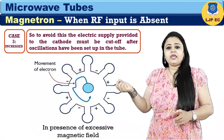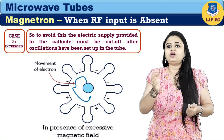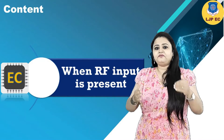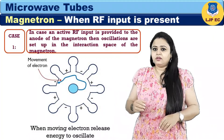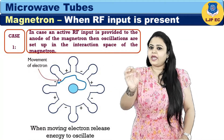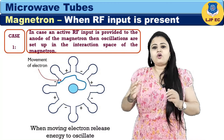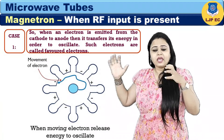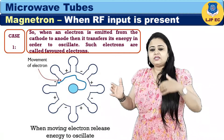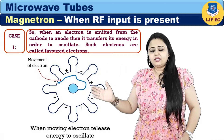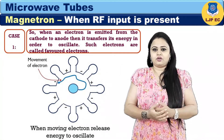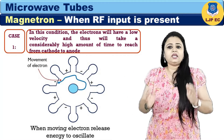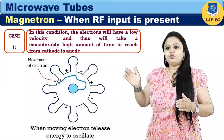To avoid back heating, the electric supply provided to the cathode must be cut off after oscillations have been set up in the tube. Now, when RF field is present: in case one, when active RF input is provided to the anode, oscillations are set up in the interaction space of the magnetron. When electrons are emitted from cathode to anode, they transfer their energy to sustain oscillations. Such electrons are known as favored electrons. These electrons have low velocity and take a considerably high amount of time to reach from cathode to anode.